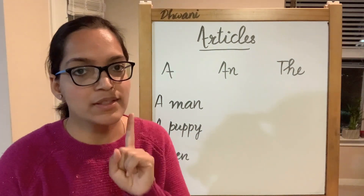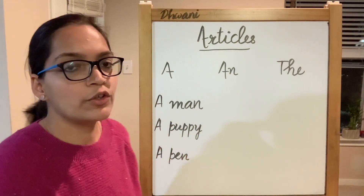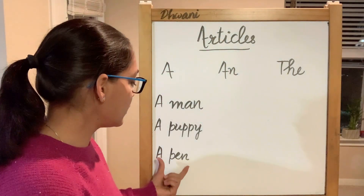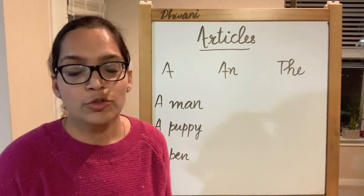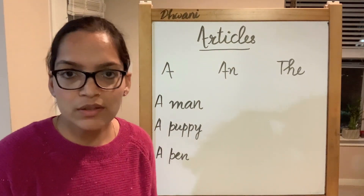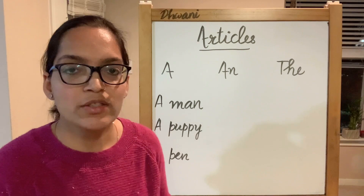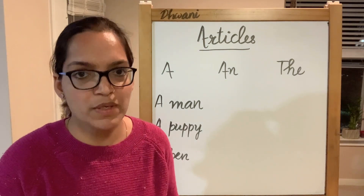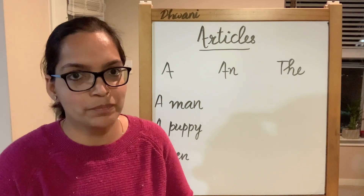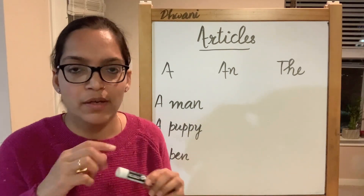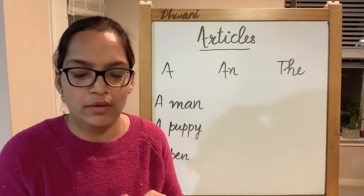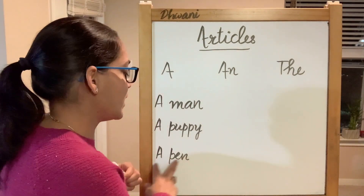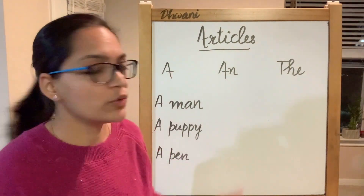A puppy — it is a singular noun and we are generally talking about just some puppy. And then a pen — p is again a consonant sound, so it will have a before it. It is talking about a single non-specific, indefinite noun. We're not talking about a particular pen out of many pens; we're generally talking about pens, so we use 'a pen'.